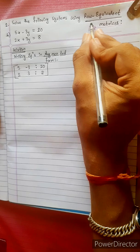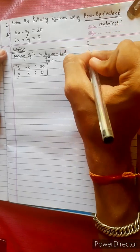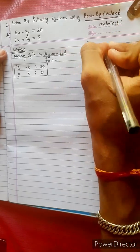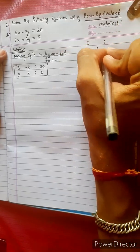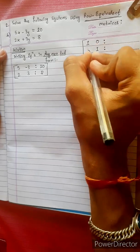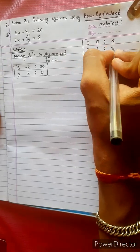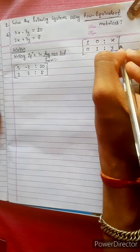Using Row Equivalent Matrices, we focus on making the main diagonal equal to 1 and all other terms equal to 0. This gives us our x and y values.